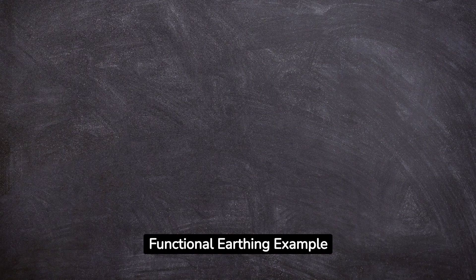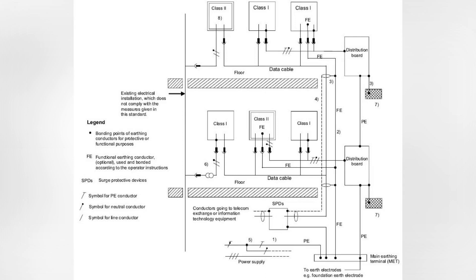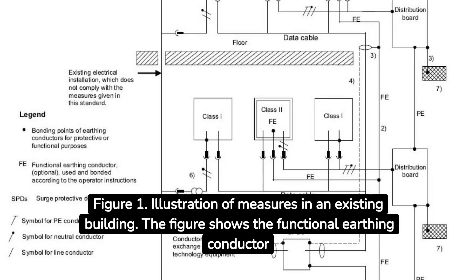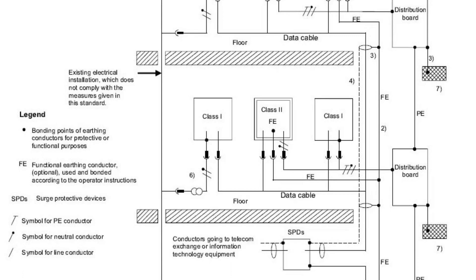Functional earthing example: where there are problems in existing building installations due to electromagnetic influences, certain measures may improve the situation. See the figure on the screen — Figure 1: Illustration of measures in an existing building — which shows the functional earthing conductor. Thank you for joining me today on this enlightening journey. Don't forget to like, subscribe, and hit that notification bell for more electrifying content. Until next time, stay safe and stay informed.